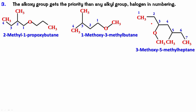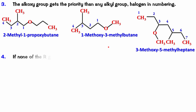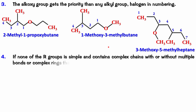This is the method of naming when one of the R groups is a very simple group. But if both groups become extremely complex — both very branched, with multiple substituents — then this type of naming is not used. We use a different type of naming: if none of the R groups is simple and both contain complex chains with or without multiple bonds or complex rings, then the naming is done using an 'oxa' substituent.